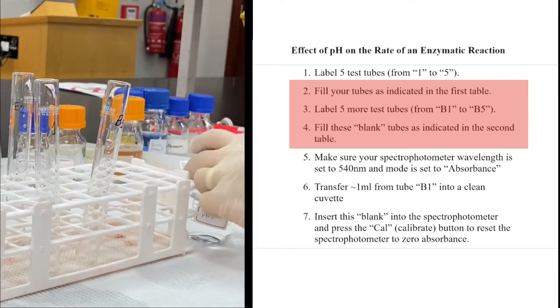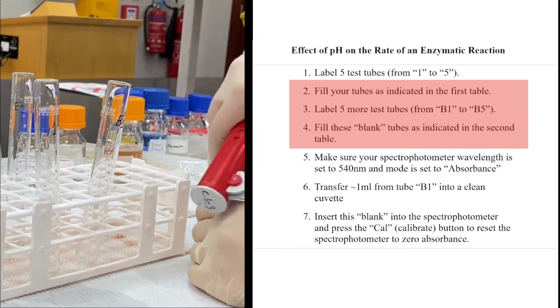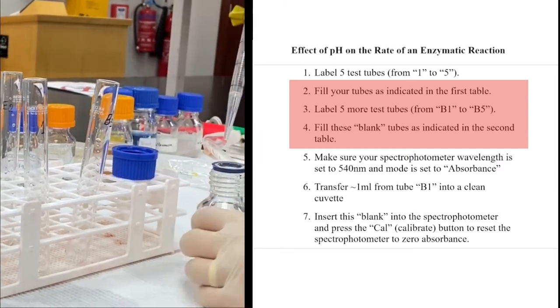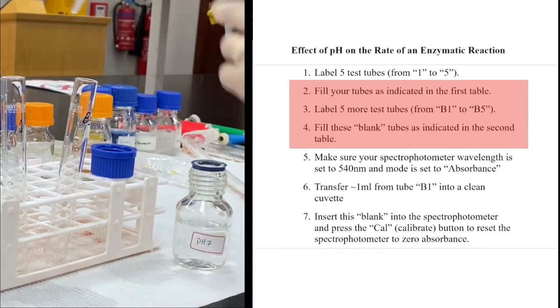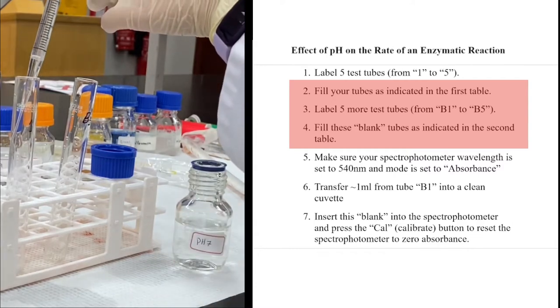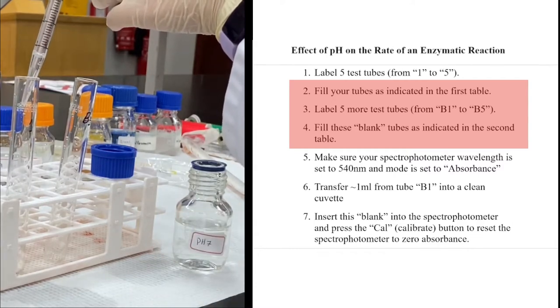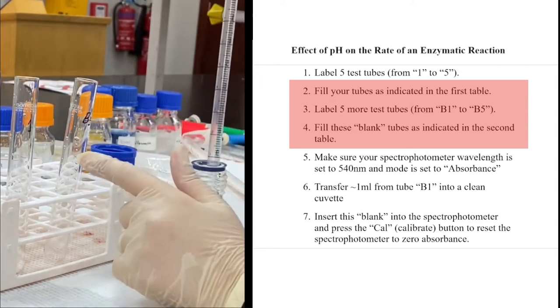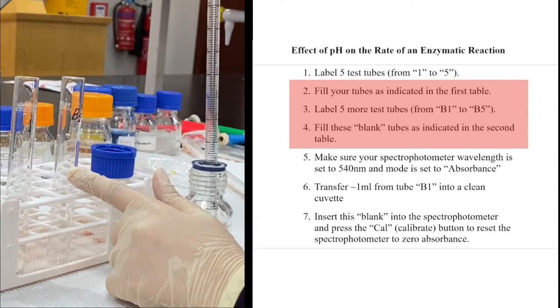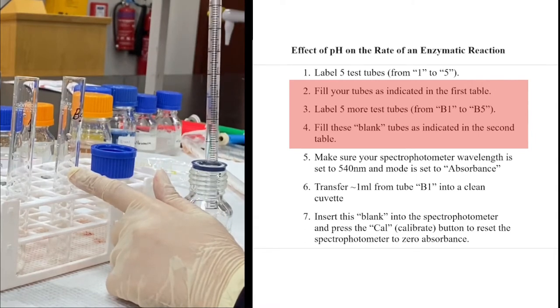I will start by filling them with distilled water. In the first test tube: 5 ml of distilled water, followed by 0.5 ml of the enzyme, and then 0.5 ml of the substrate. In this test tube, I will not add the substrate. This is my blank, so I will compensate the volume by adding 5.5 ml of the buffer solution.